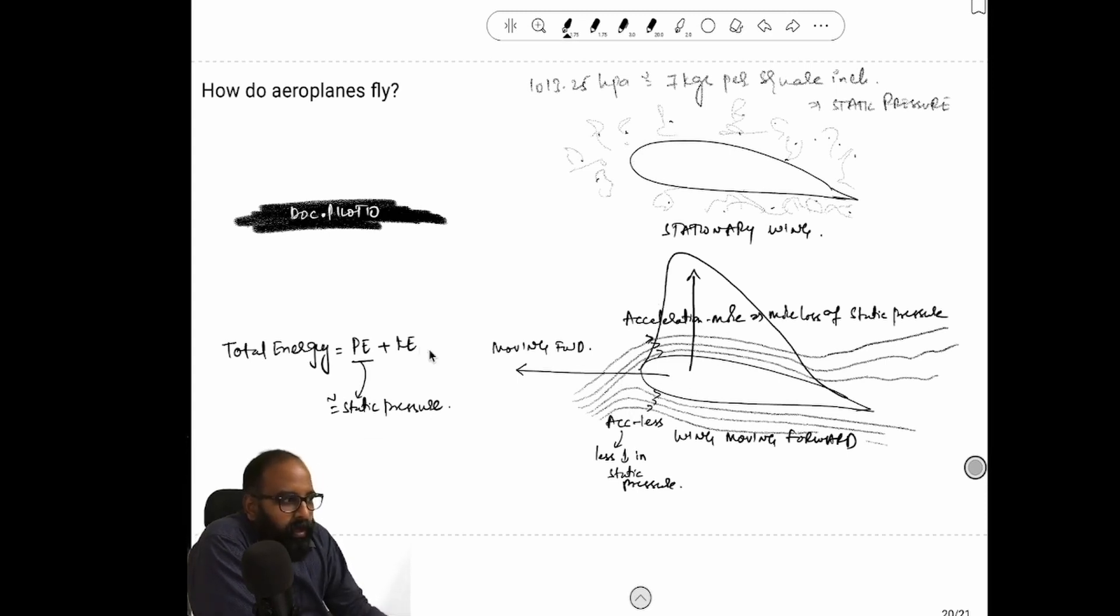So acceleration is more on the upper surface. We have studied in lower classes total energy is constant. Potential energy plus kinetic energy is constant. Now as the aircraft wing moves forward, the air is accelerated on the upper surface more. So the kinetic energy of the air will increase. That means the potential energy which is the static pressure which was exerted here will decrease.